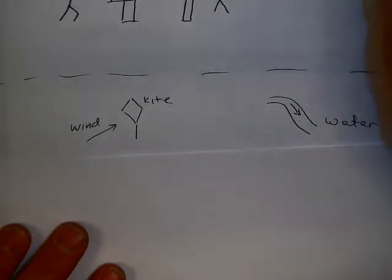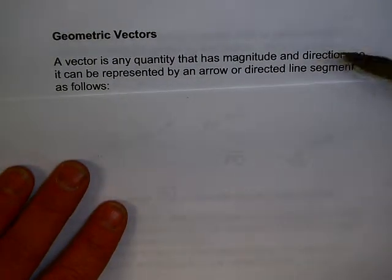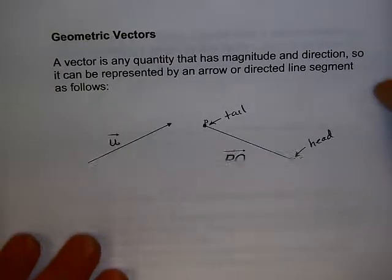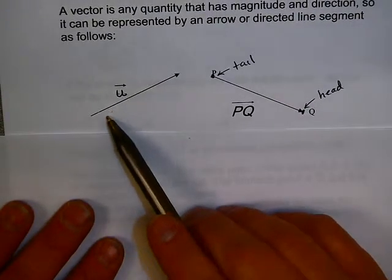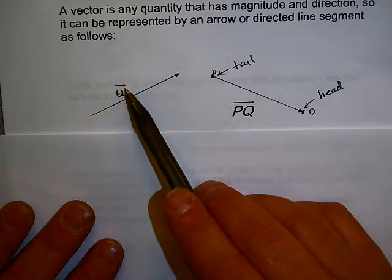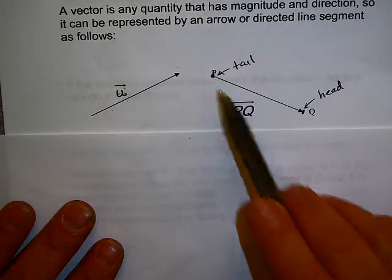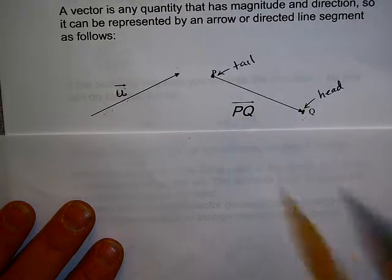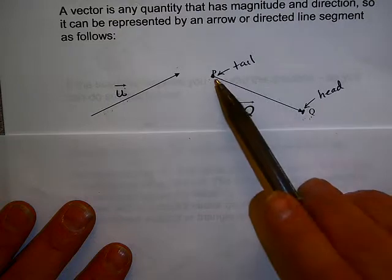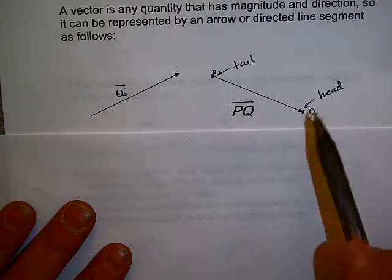Because vectors are such an important topic, we like to have two ways to look at vectors: the first geometrically and the second algebraically. A vector is any quantity that has magnitude and direction. Because it has a magnitude and direction, we represent it with an arrow, or sometimes what is called a directed line segment. We might use this arrow here — we would call it vector u. Notice the arrow above the u. This could also be represented as the vector PQ, where P is the starting point, sometimes called the initial point, and Q is the ending point, sometimes called the terminal point. We sometimes call P the tail and Q the head of the vector.